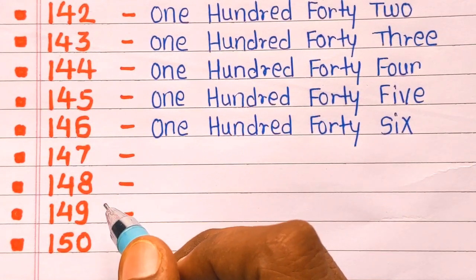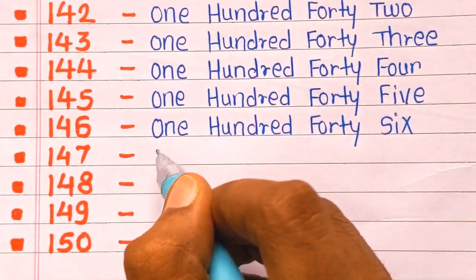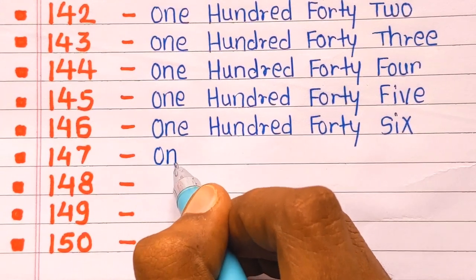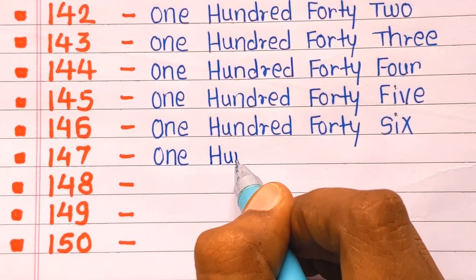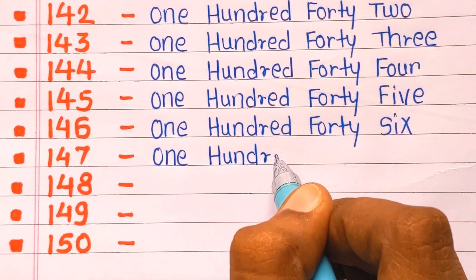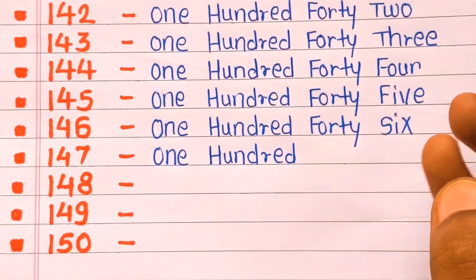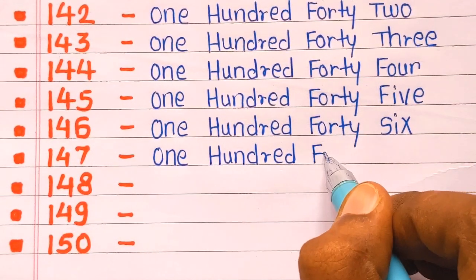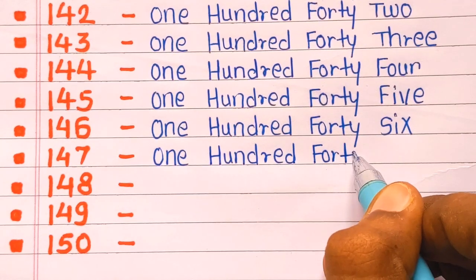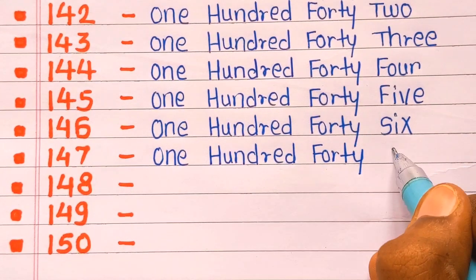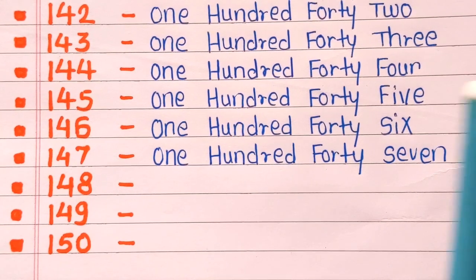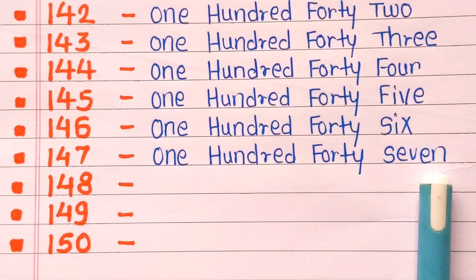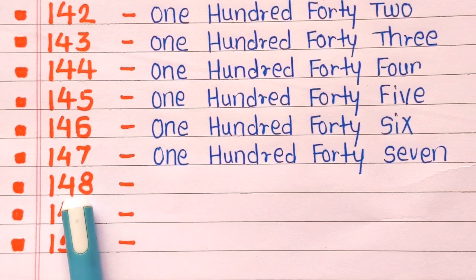Next is 147. 147 is one hundred forty seven. O-N-E, one. H-U-N-D-R-E-D, hundred. F-O-R-T-Y, forty. S-E-V-E-N, seven. 147.